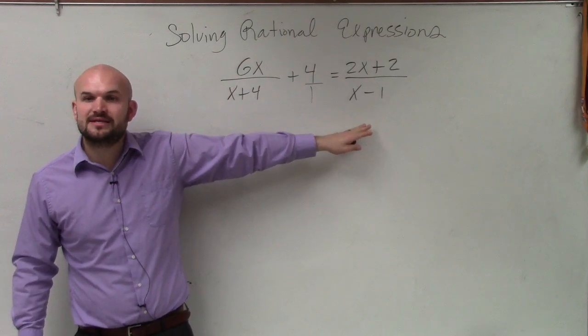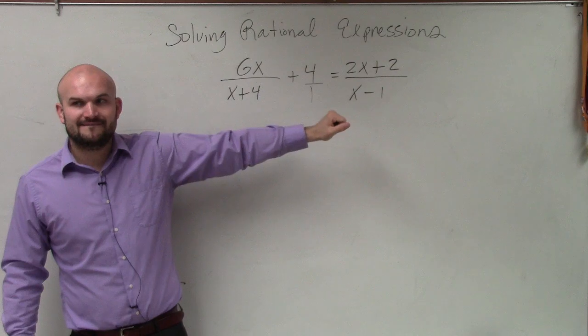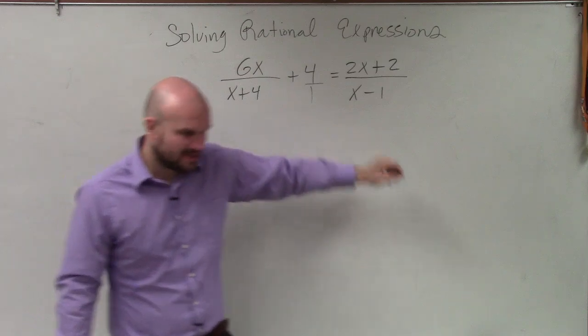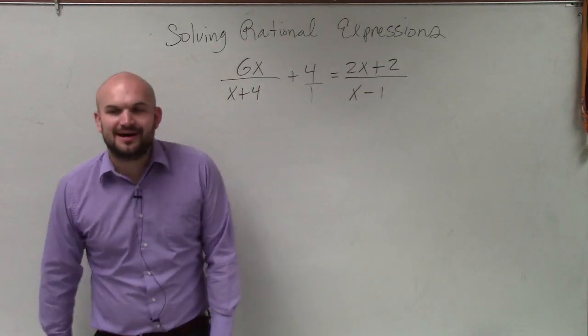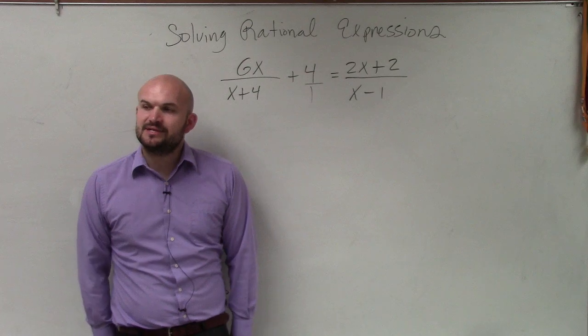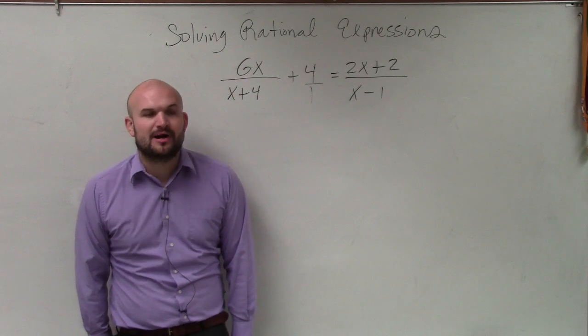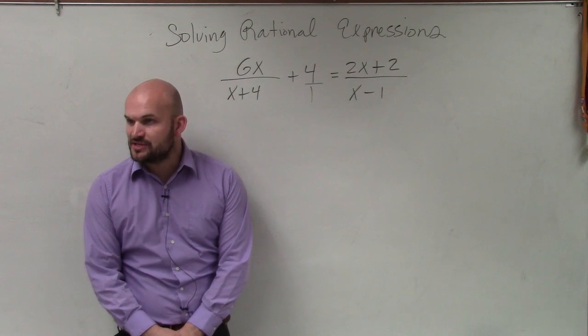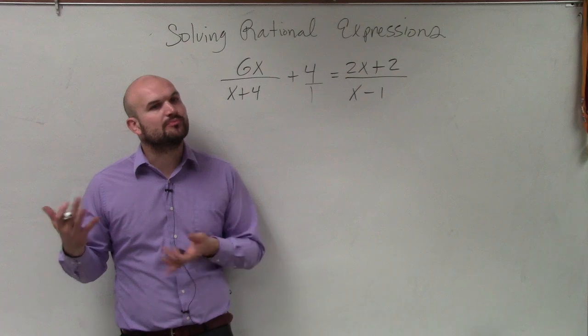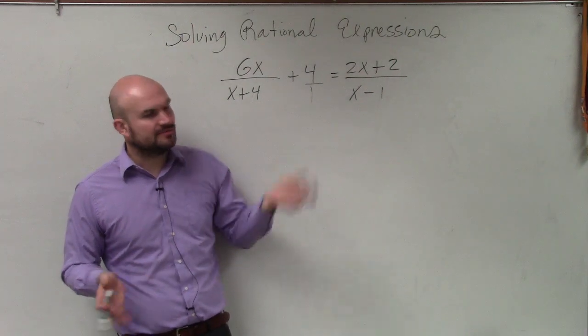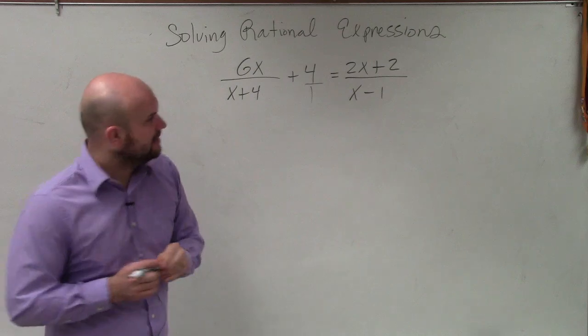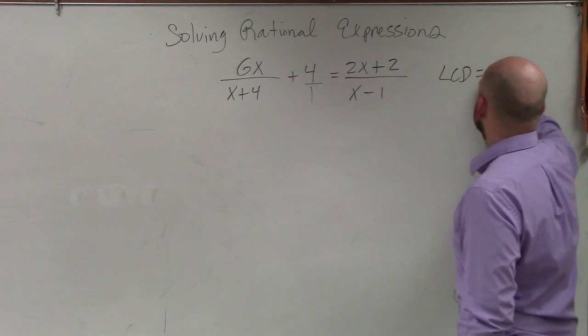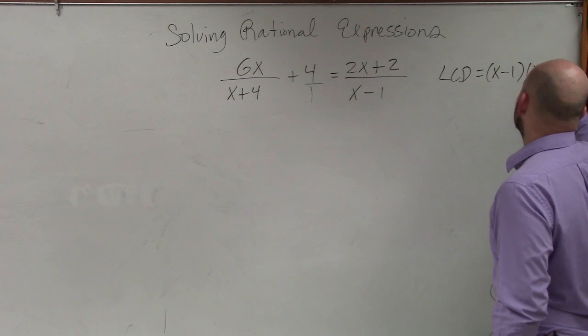So therefore, to identify my least common denominator is going to be x minus 1 times x plus 4. So we'll go back to what we learned last class period. If you guys remember, when we're identifying the least common denominator of expressions, it's basically going to be your product of your two separate denominators. And we've talked about this with adding and subtracting.